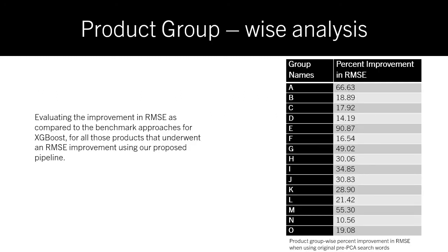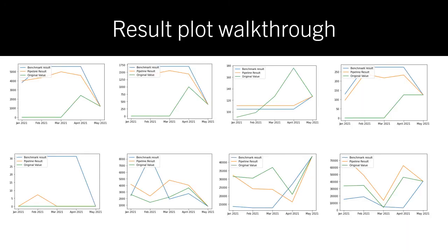Next, we conduct a product group-wise analysis in which we club each product into its product groups. We evaluate the improvement in RMSE compared to the benchmark approaches while using the XGBoost model for all those products that underwent an RMSE improvement using our proposed pipeline. From this table, we can notice that over 66.63% of products from several product groups show an improvement. This slide also shows plots where we can notice how close our benchmark is to the original values, and that our pipeline performs much better than the benchmark itself.